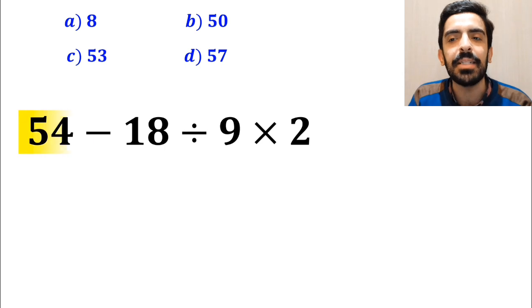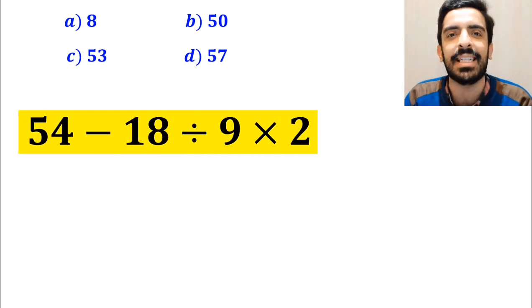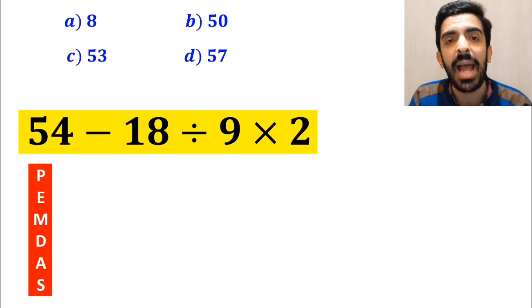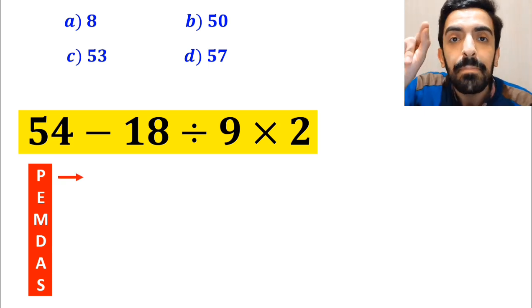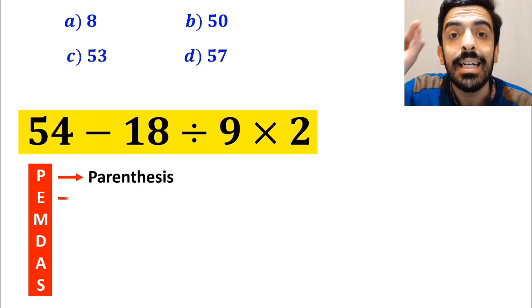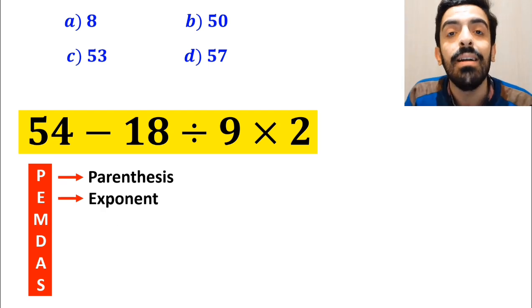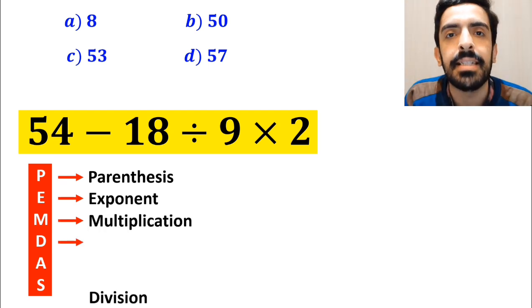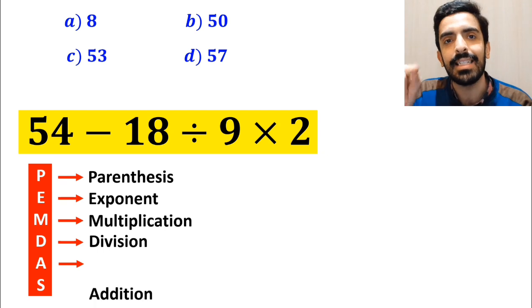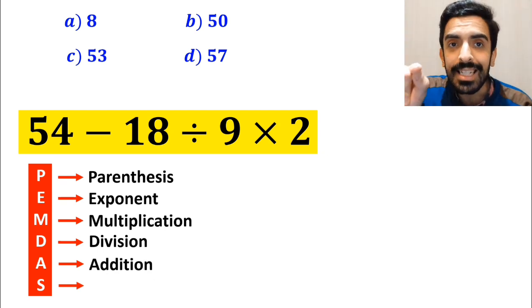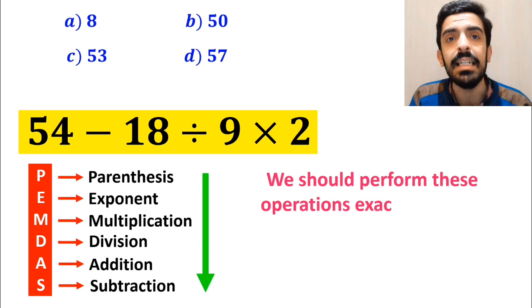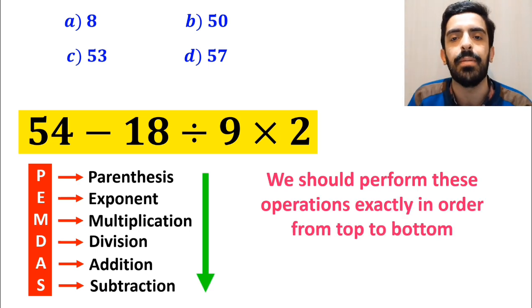Now let's go step by step and solve this expression correctly. To solve this problem, we must follow a rule called PEMDAS. In this rule, P stands for parentheses, E stands for exponent, M stands for multiplication, D stands for division, A stands for addition, and S stands for subtraction. We should perform these operations exactly in order from top to bottom.